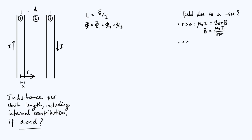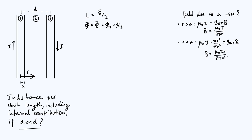Applying Ampere's law when R is less than A — within the wire — it's mostly the same, but you have to think carefully about the current enclosed, because you're not encircling all of the current. Assuming the current is uniformly distributed, you multiply by the fraction πR²/πA², which is the fraction of the area encircled. The right-hand side is still the line integral 2πRB, and simplifying gives B = μ₀IR / 2πA².